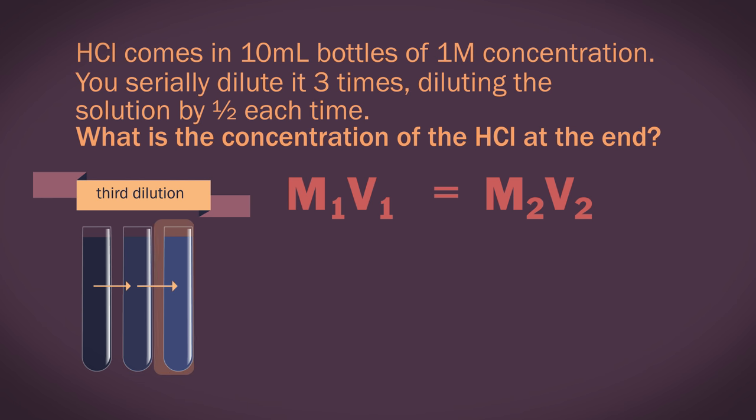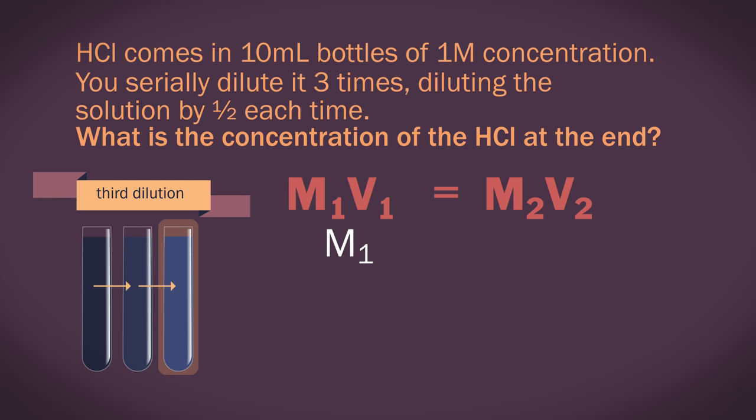And finally our third dilution. M1 equals a quarter, V1 equals 40 mL.